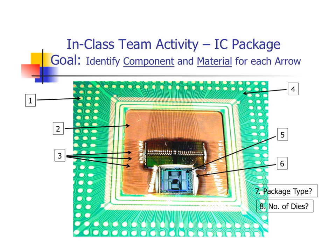To see if we can apply what we've learned so far, here's a preview of what we'll be discussing in class. In your teams, we'll identify the subcomponents and materials in this package. Do you recognize this package type? Can you count how many dies there are in this package? What do we call this overall kind of package where we have more than one die inside of the cavity? We'll talk about this in class more.